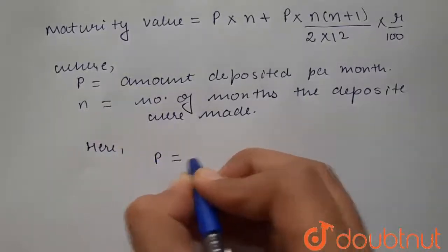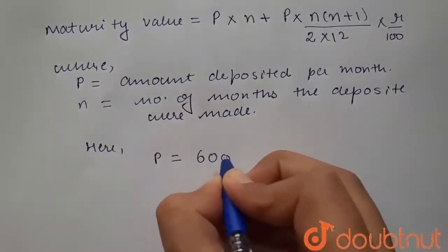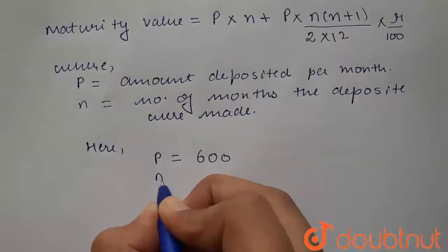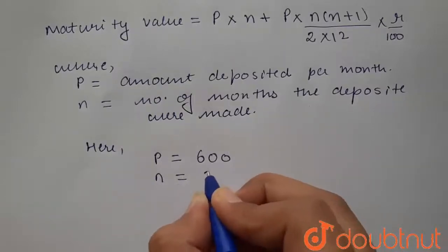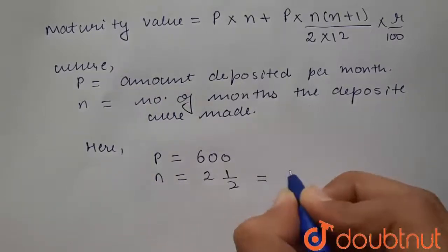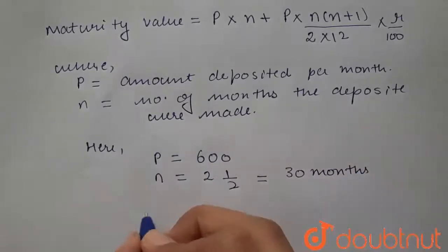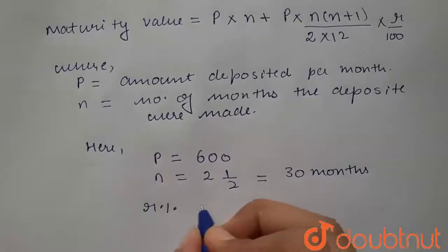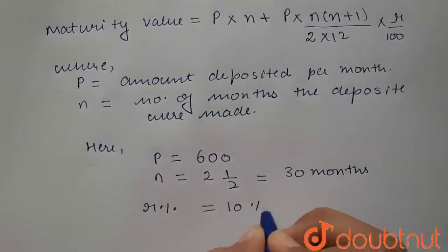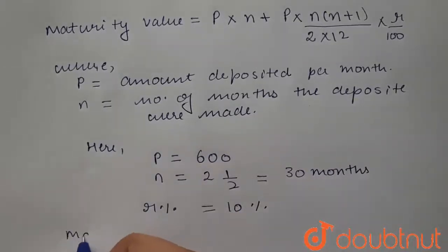Now, P = 600, n = 2.5 years = 30 months, and rate of interest r = 10%. So the maturity value